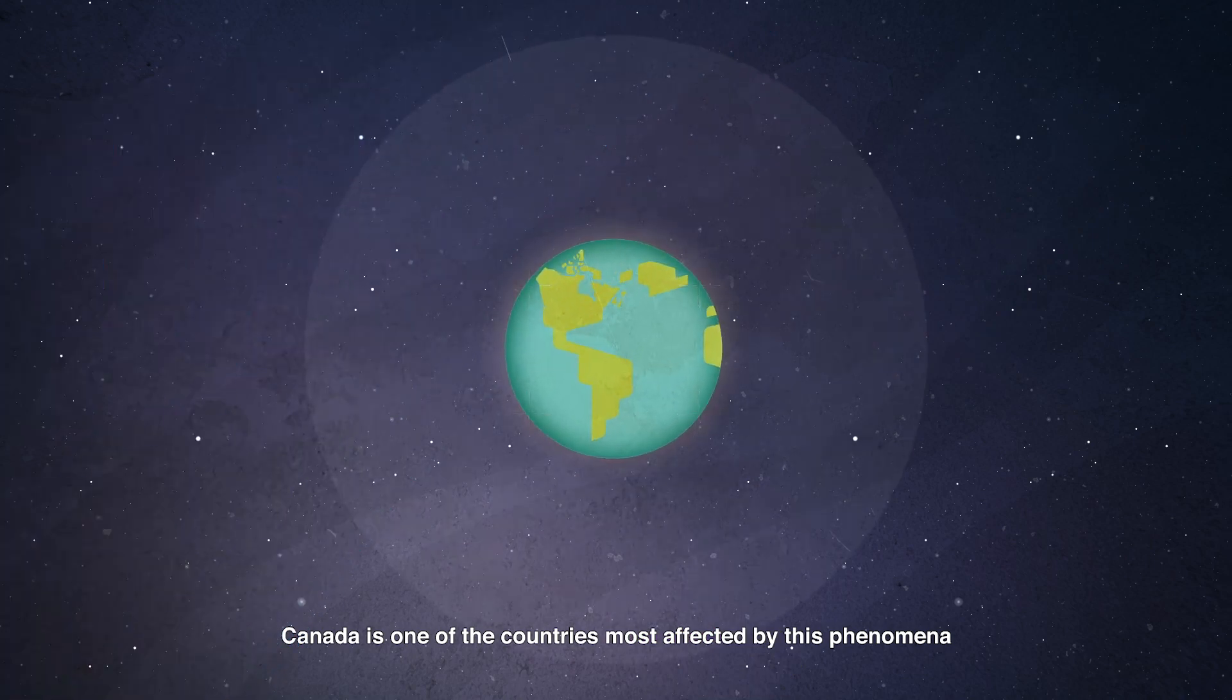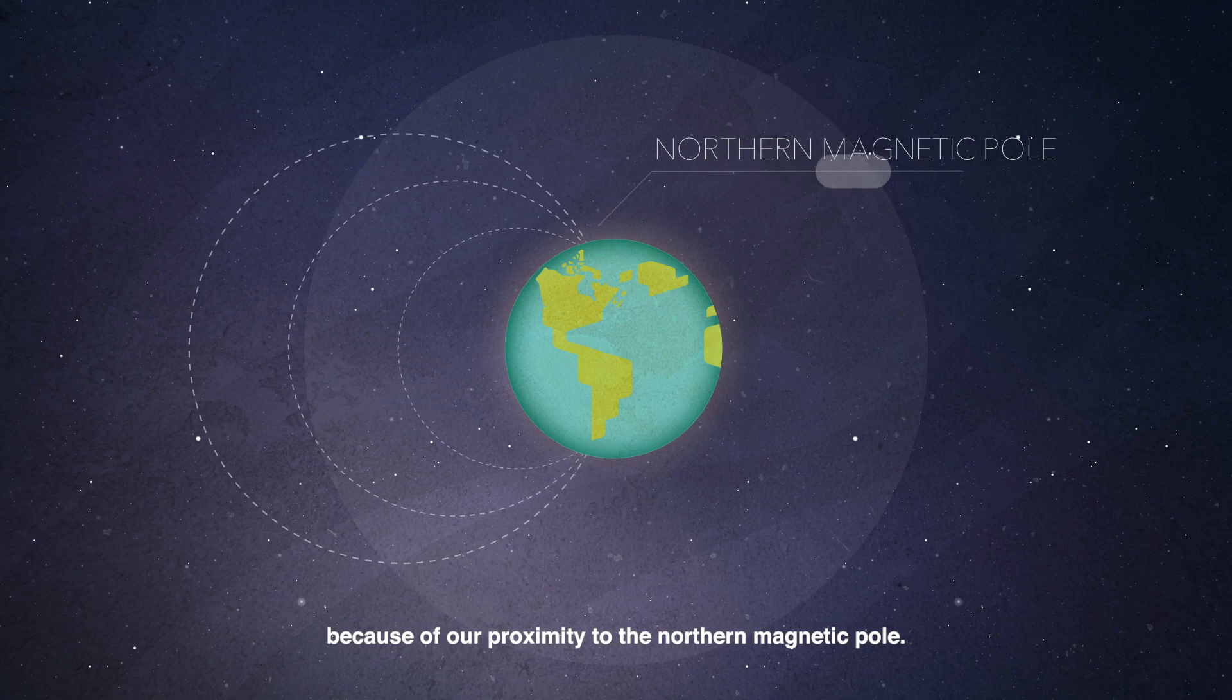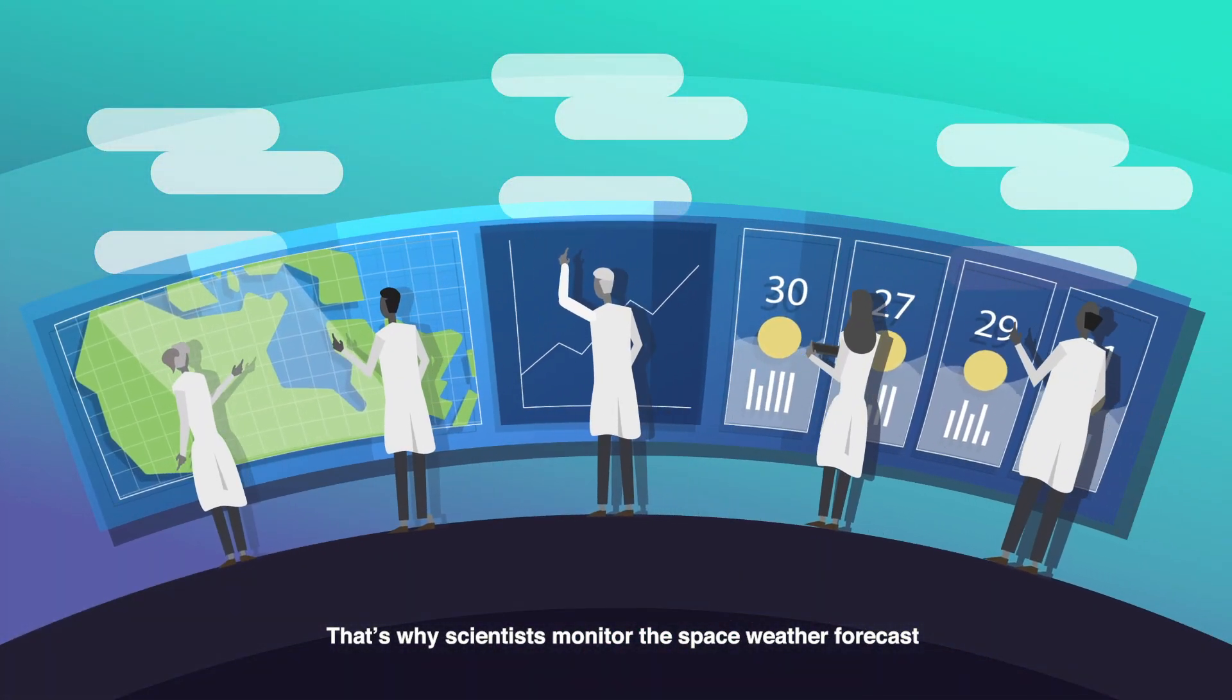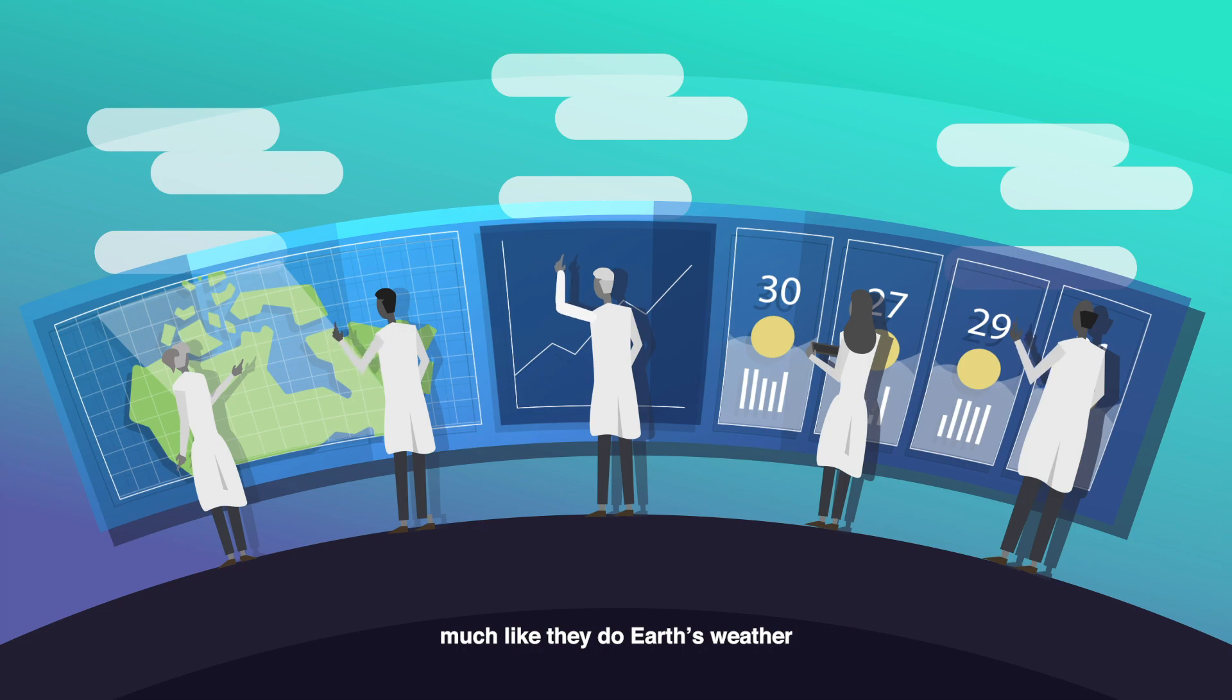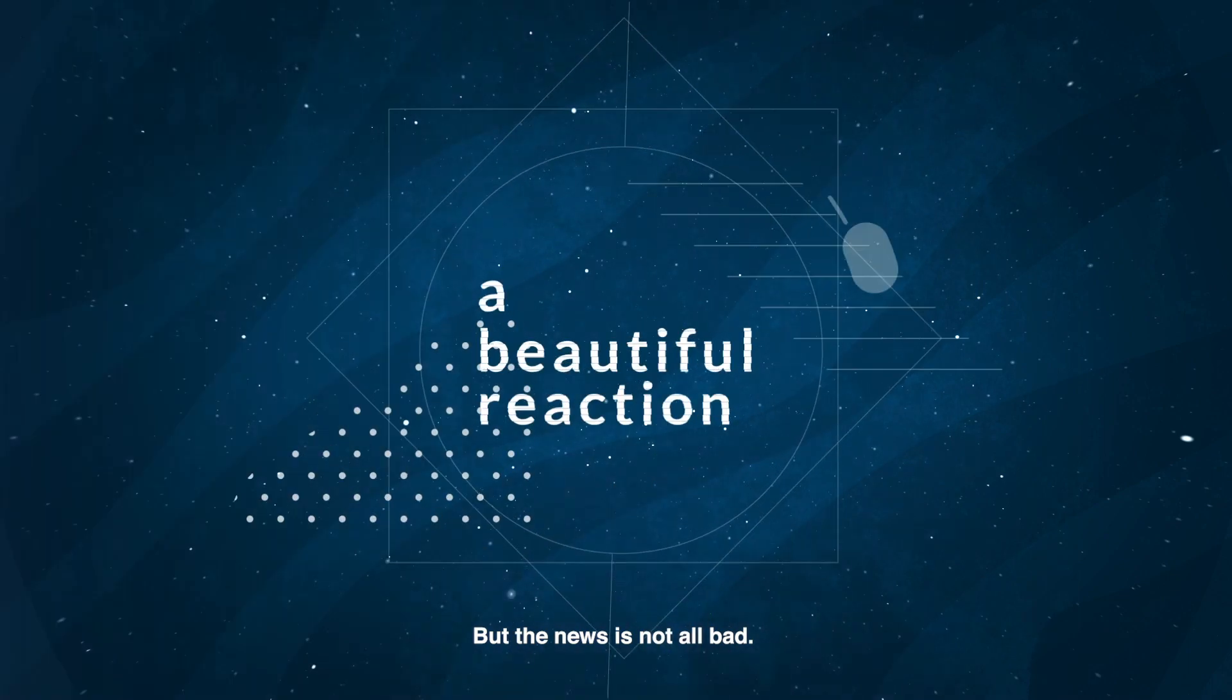Canada is one of the countries most affected by this phenomena because of our proximity to the northern magnetic pole. That's why scientists monitor the space weather forecast, much like they do Earth's weather, so that they can predict changes and prevent or mitigate any damage. But the news is not all bad.